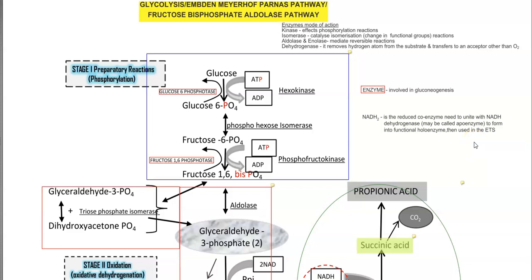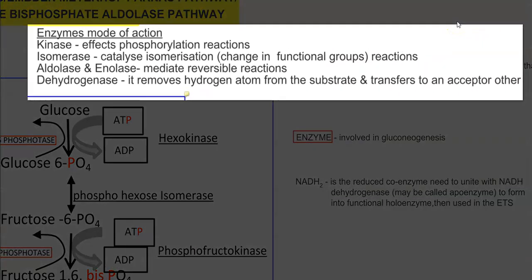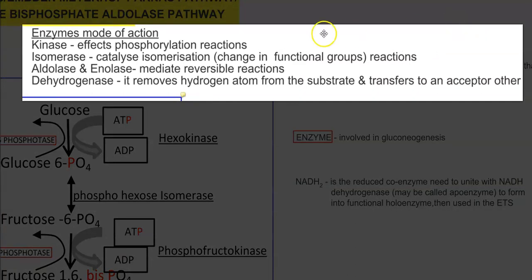Glycolysis can be operative in the presence of oxygen or in the absence of oxygen. It mainly operates in the cytoplasm of the cell. The enzymes involved in this pathway can be broadly grouped based on their suffixes, as shown here.